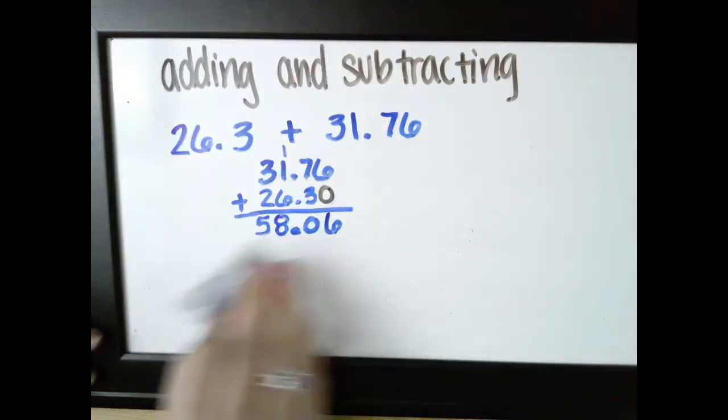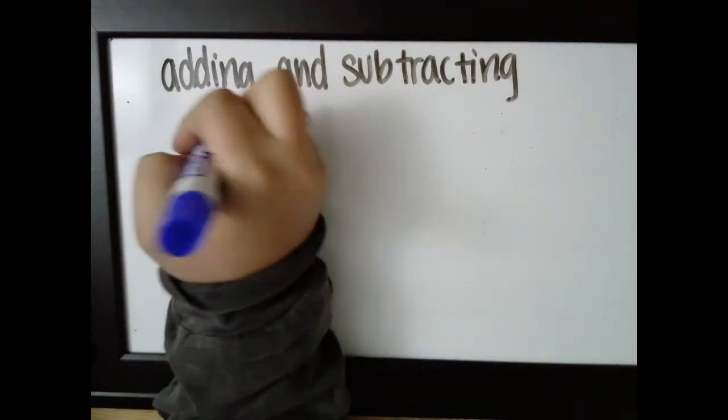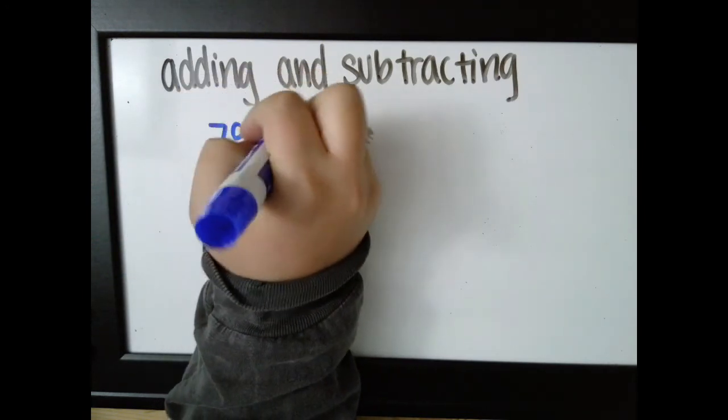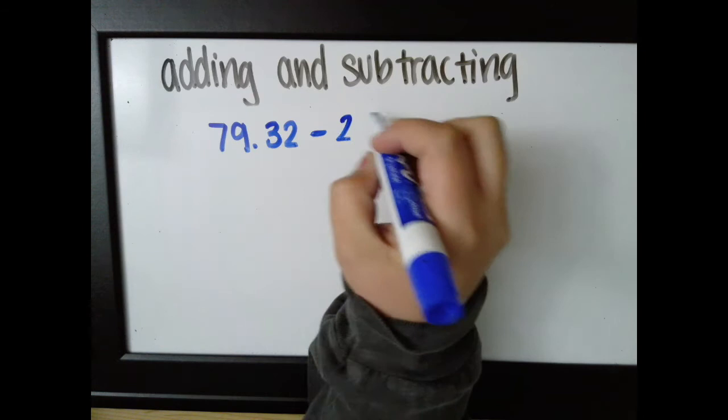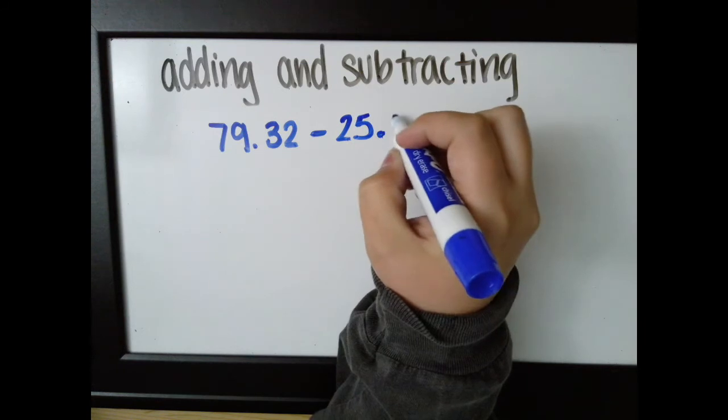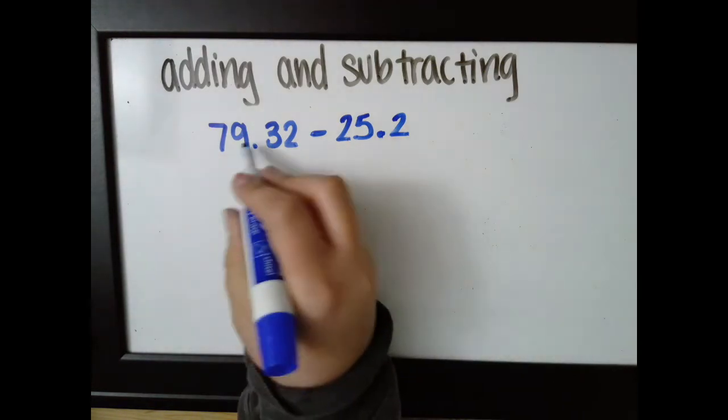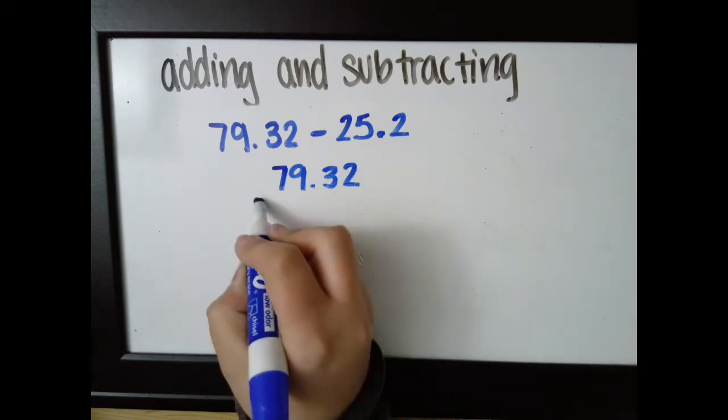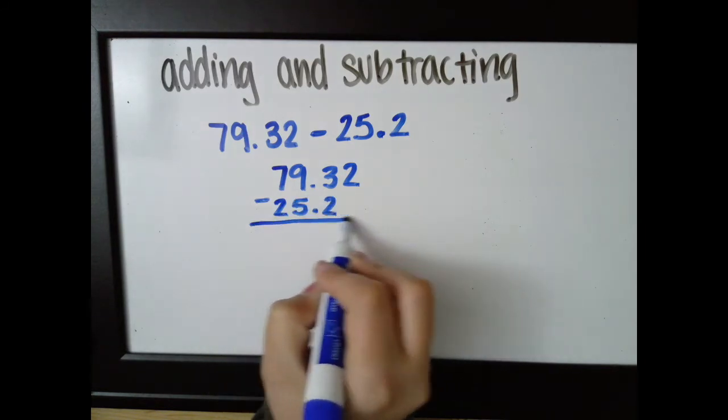Let's do a subtraction problem. Now I can't switch order in subtraction, so let's say that it's 79.32 minus 25.2. I have to put it in this order when I stack and I have to stack so that I can see everything. Minus 25.